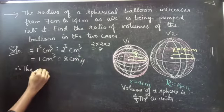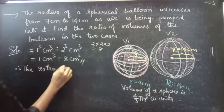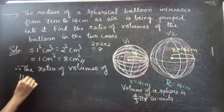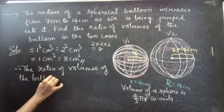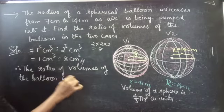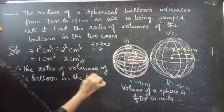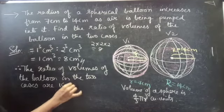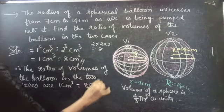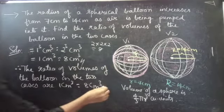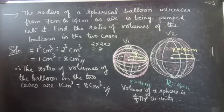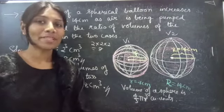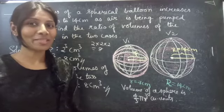Therefore, the ratio of volumes of the balloon in two cases is 1 cm³ is to 8 cm³. So we have seen a problem in this video, hope you will understand. We will see you in the next video and until then, bye bye!